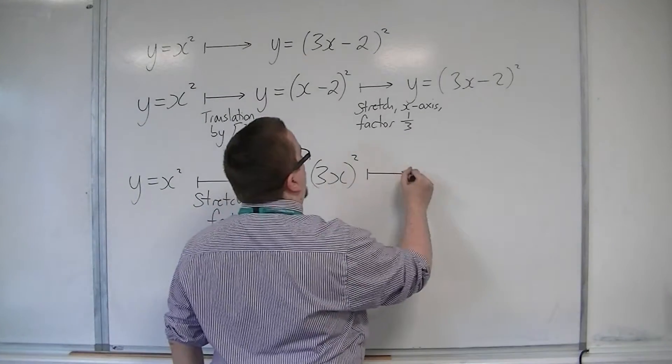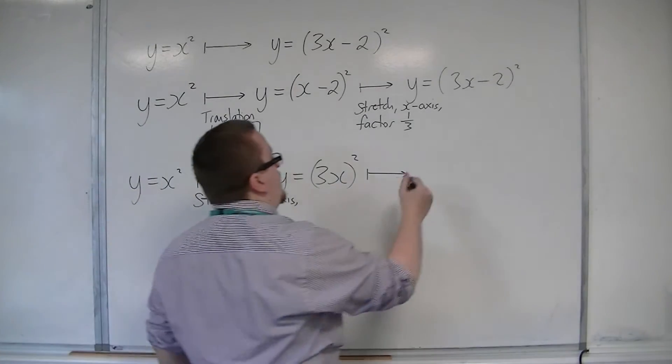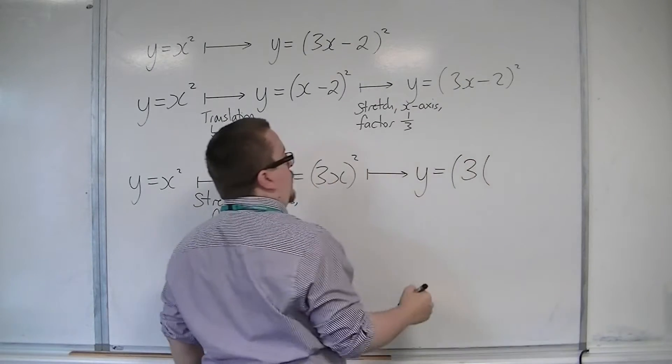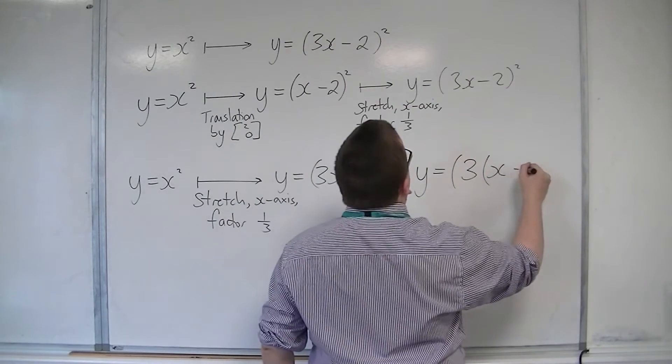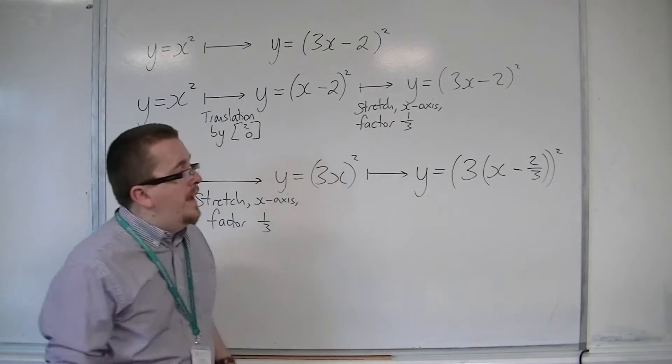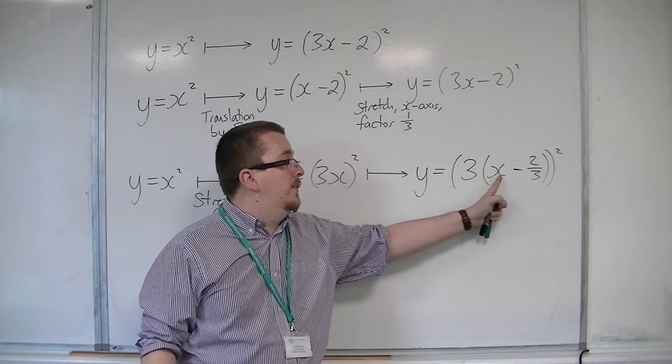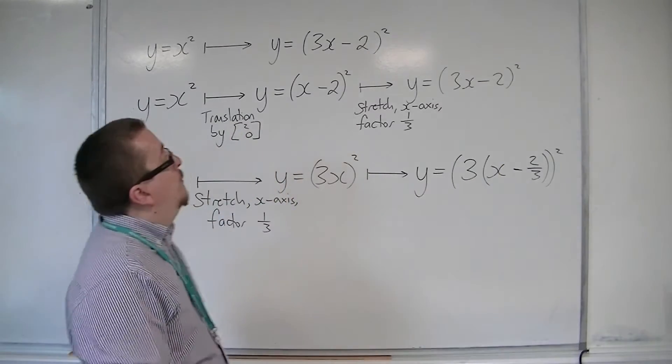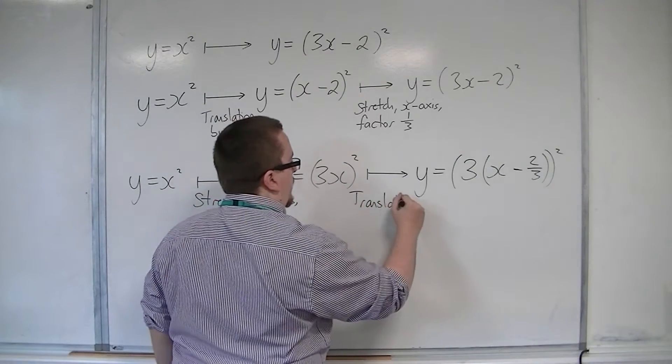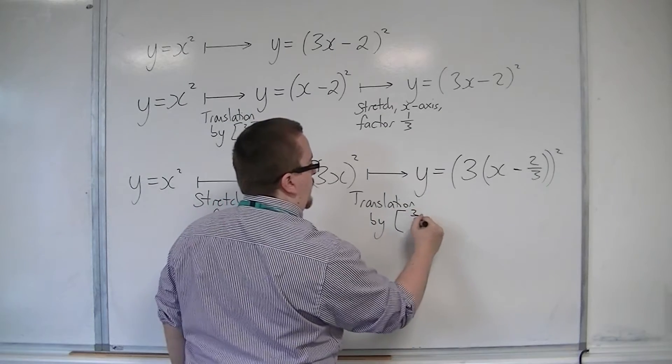I need to find out a way to get me to 3x - 2. And that would need me to replace the x with x - 2/3. Because then, inside that main bracket, I would get 3x, take away 2, which is what I want. So that would be a translation by the vector (2/3, 0).